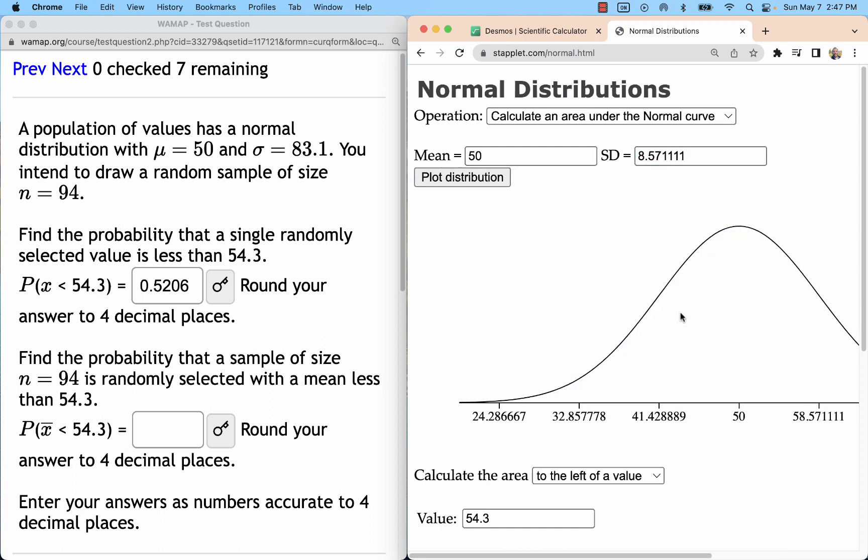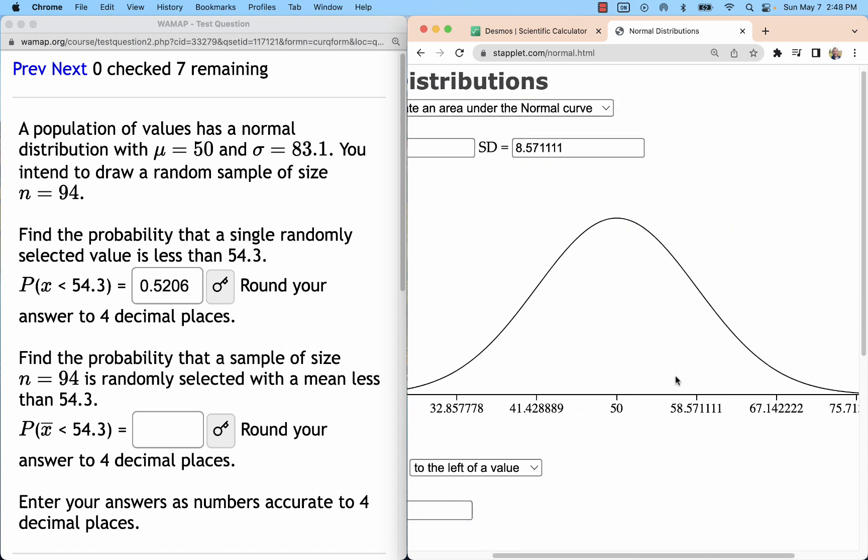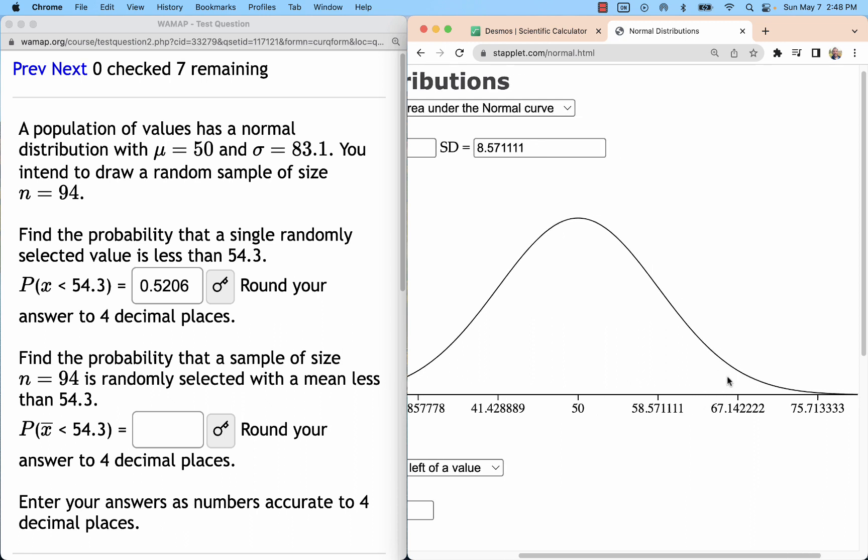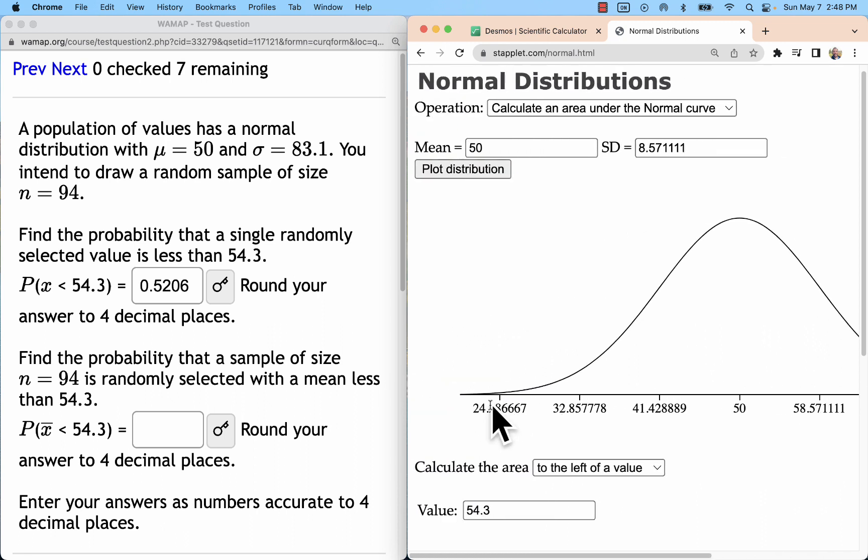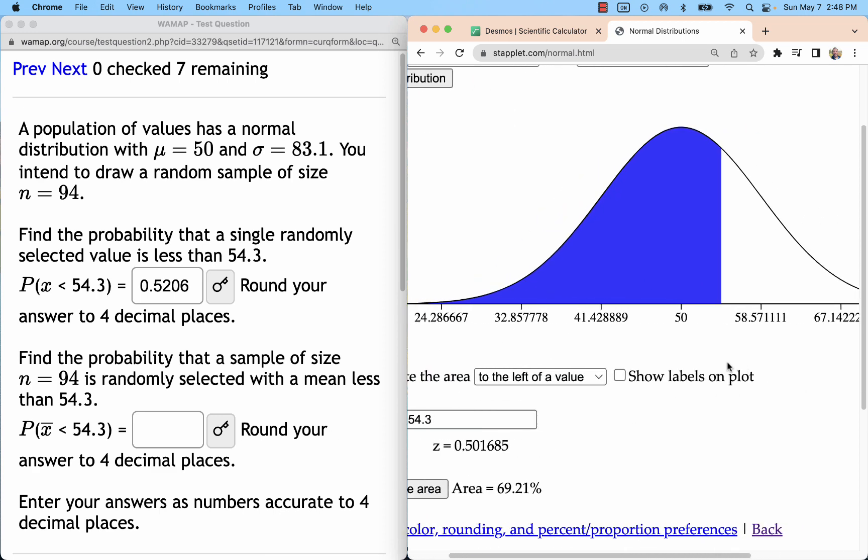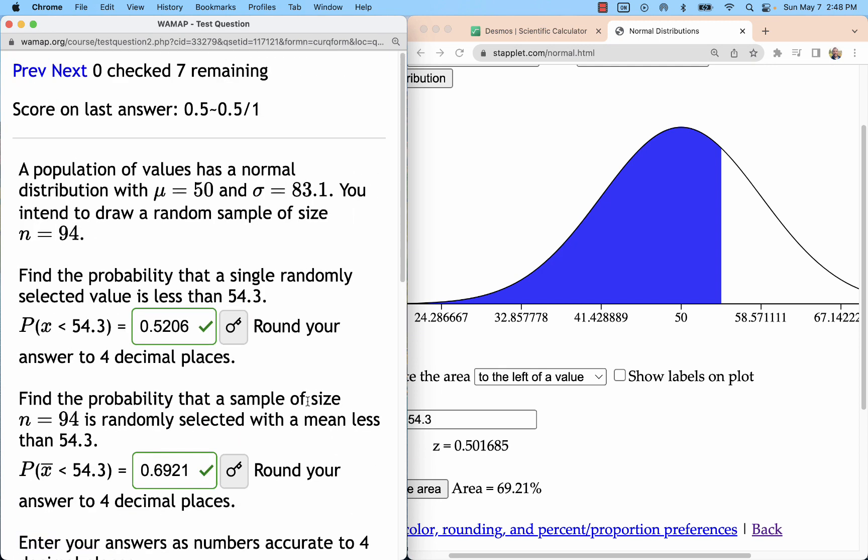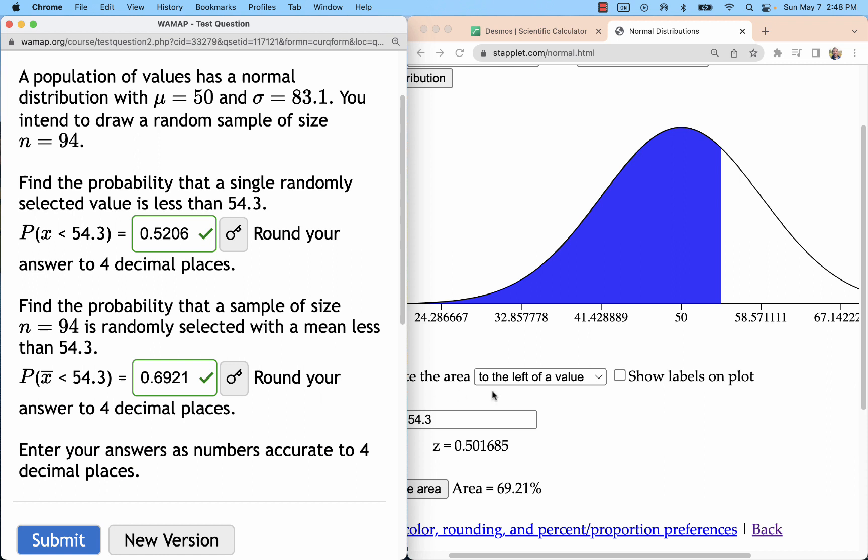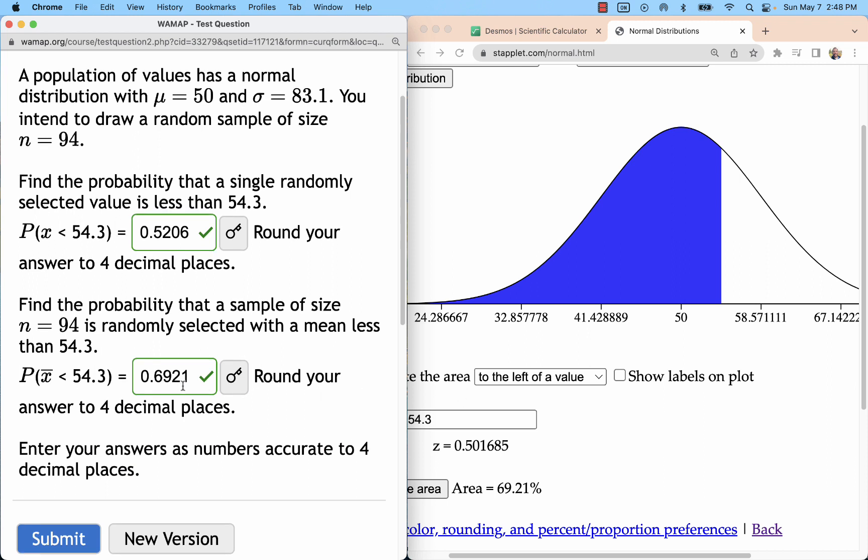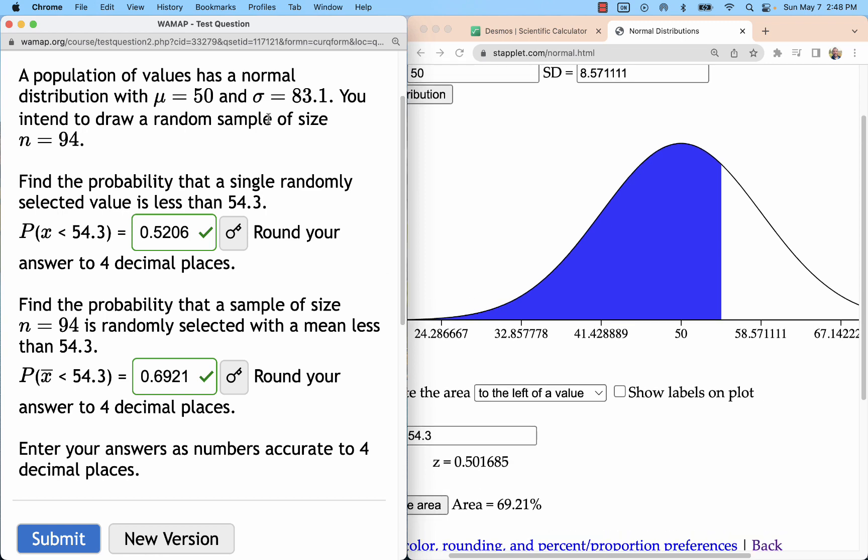Now I'm going to plot it and we don't really see the curve, it still looks the same, but now it's just the numbering that's changing. We're not going to see as much variation, so we don't go to the negatives anymore. And now to the left of 54.3 is going to be 0.6921. So that was the probability of getting a sample mean below 54.3 in a sample of 94 from that original population.